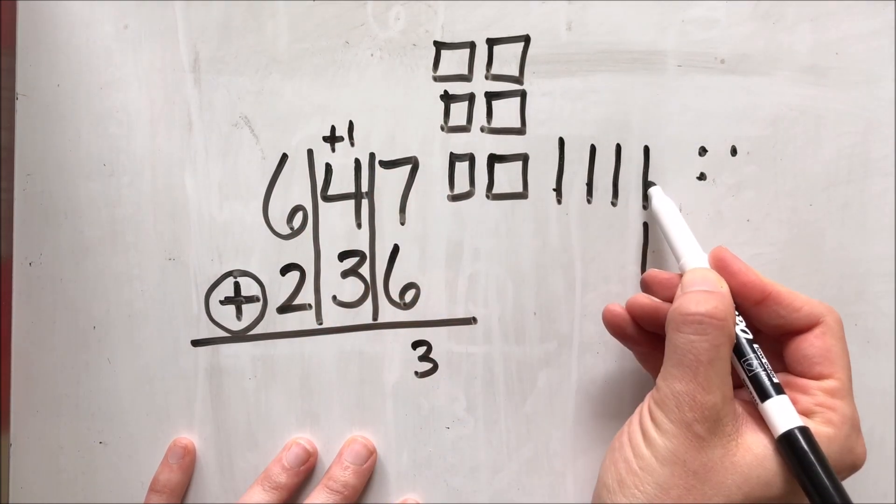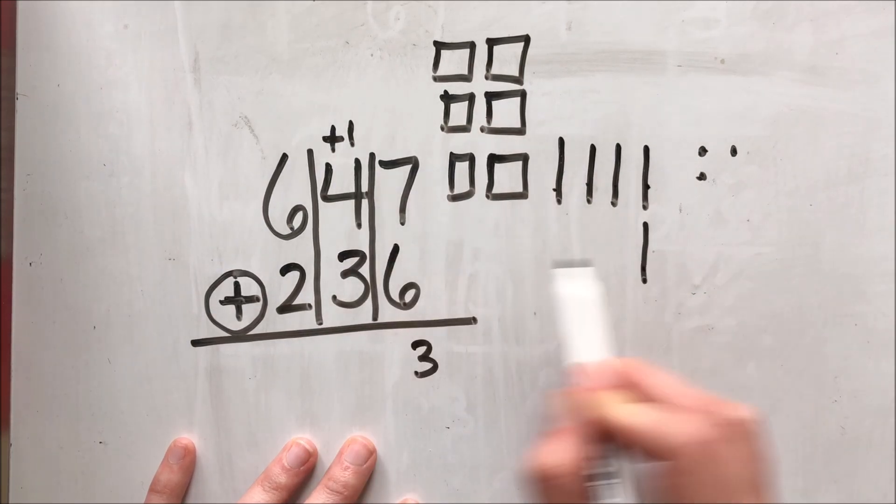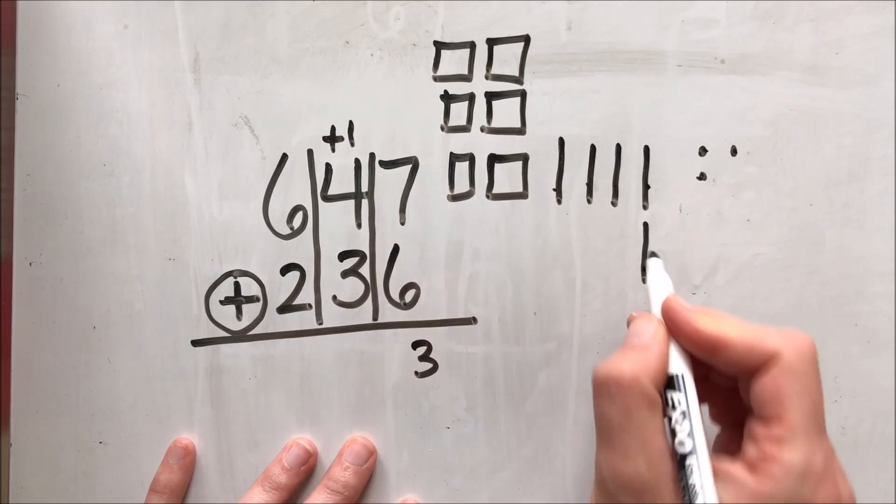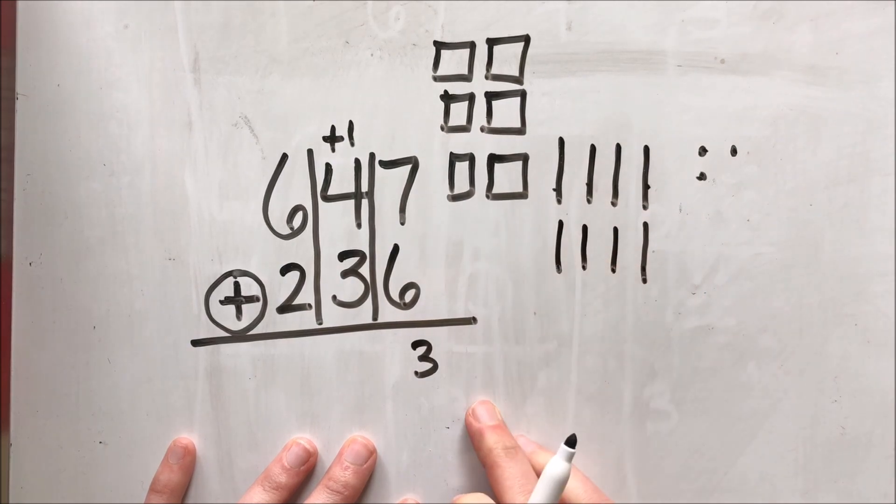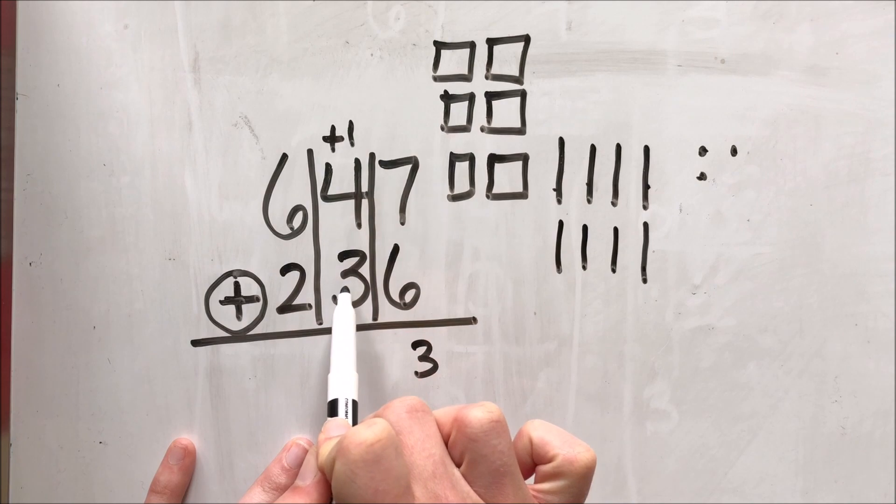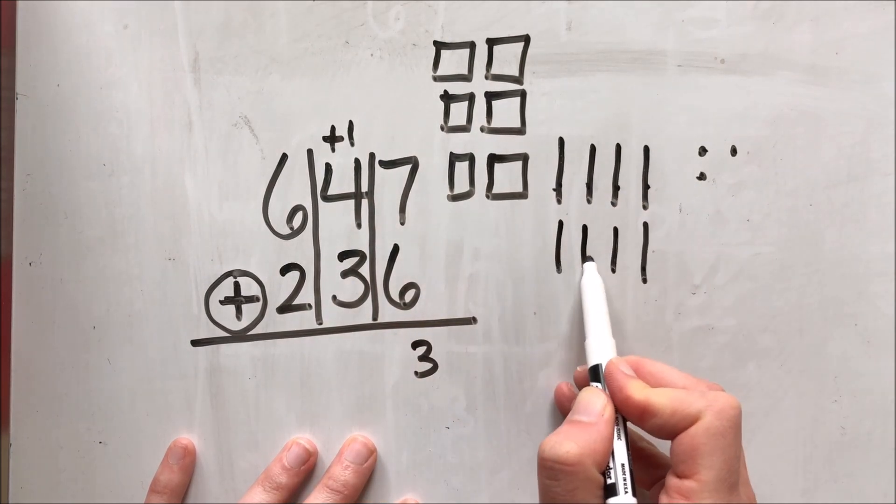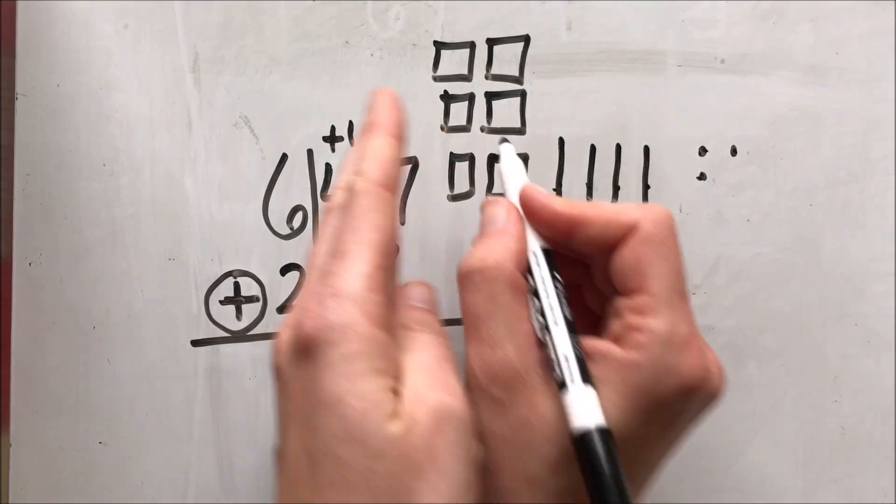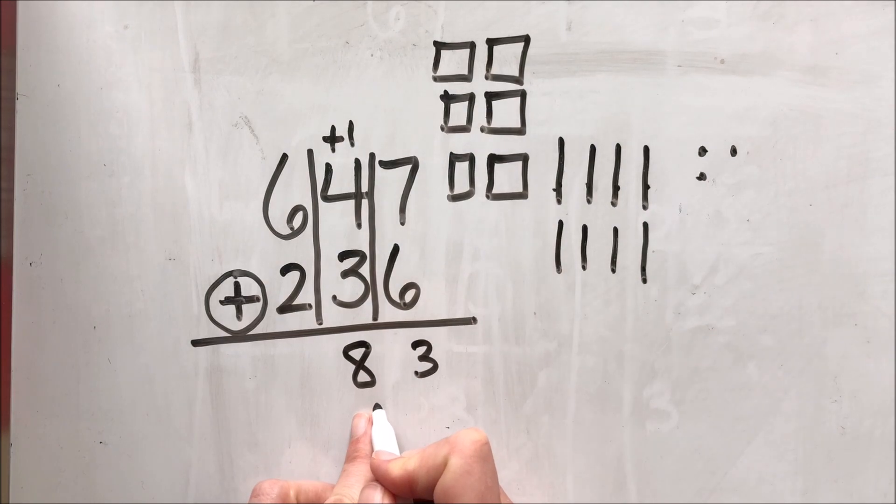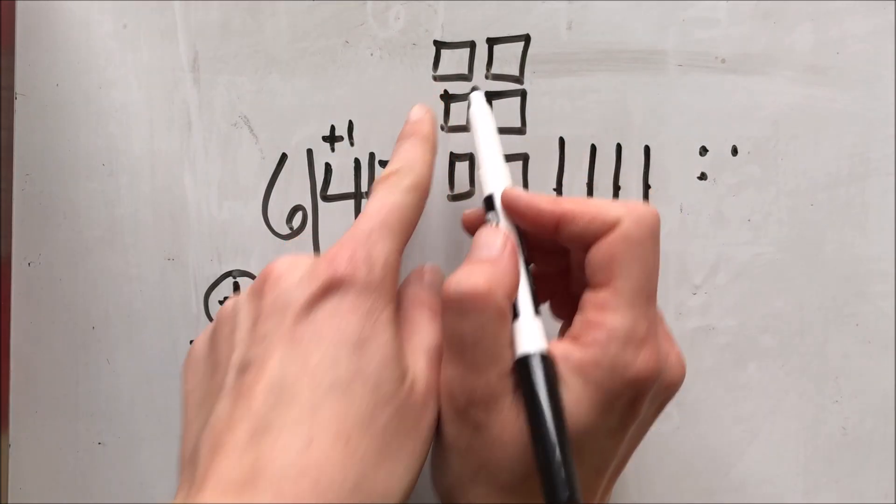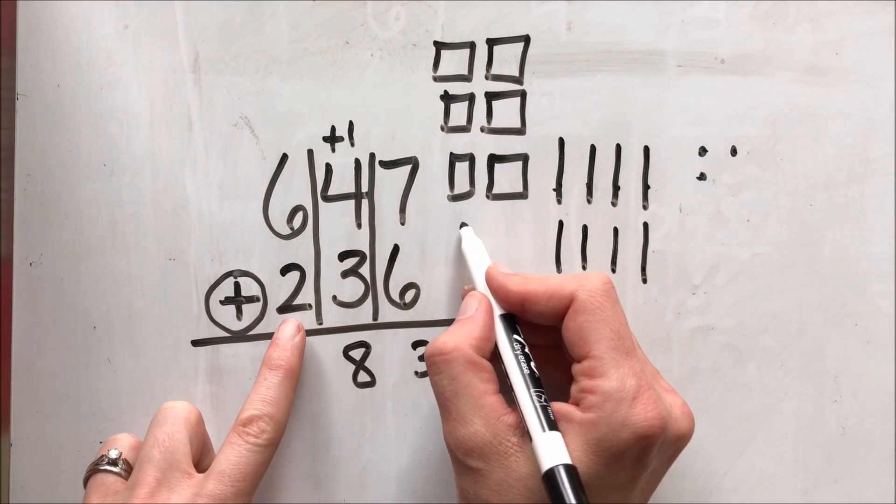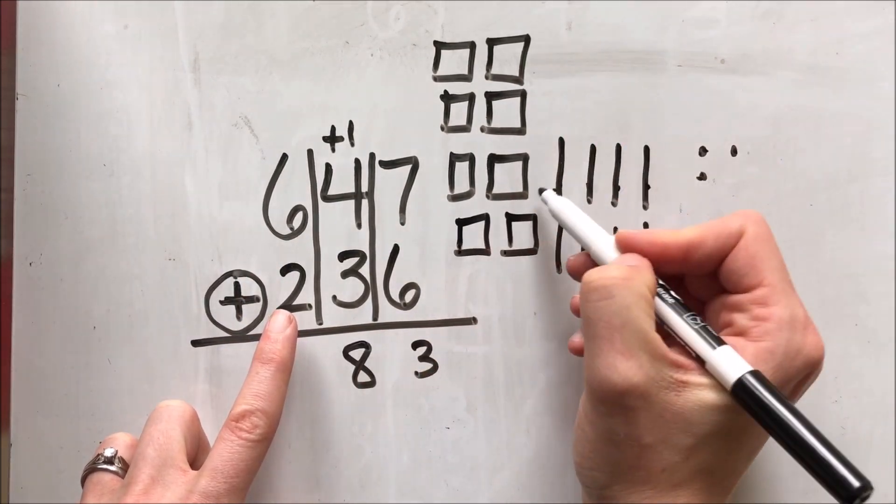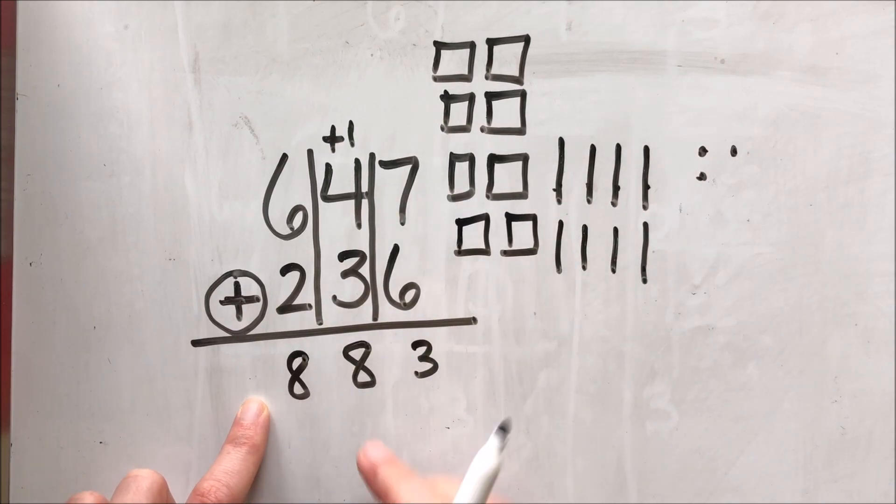Now I have one, two, three, four tens plus my extra ten up here and now I'm adding on three more tens. One, two, three. And all together I have one plus four plus three or one, two, three, four, five, six, seven, eight tens. I don't need to turn those tens into a hundred because I have eight here which is nine or less. Then I have six one hundreds blocks and I need to add two more in. So I have six plus two and that equals eight. So 647 plus 236 is 883.